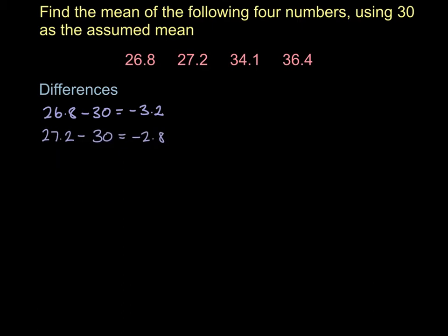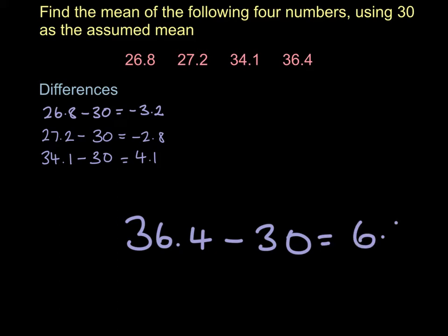We're going to do that for the other two numbers as well. Our next calculation is going to be 34.1 take away 30 equals 4.1. And then 36.4 take away 30, and that gives us 6.4.